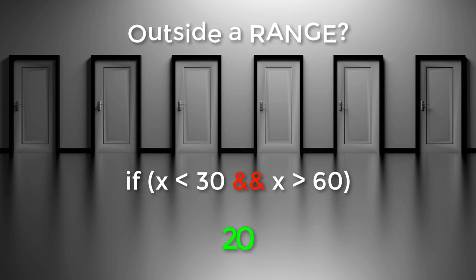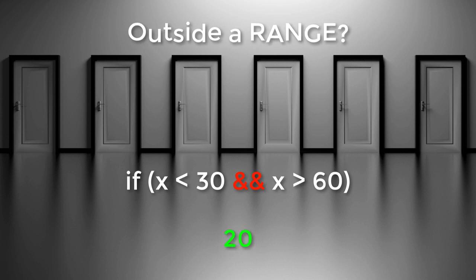So let us take the value of 20. 20 is outside the range of 30 to 60. Can 20 be less than 30? Yes. Can 20 also be more than 60 at the same time? Definitely not.